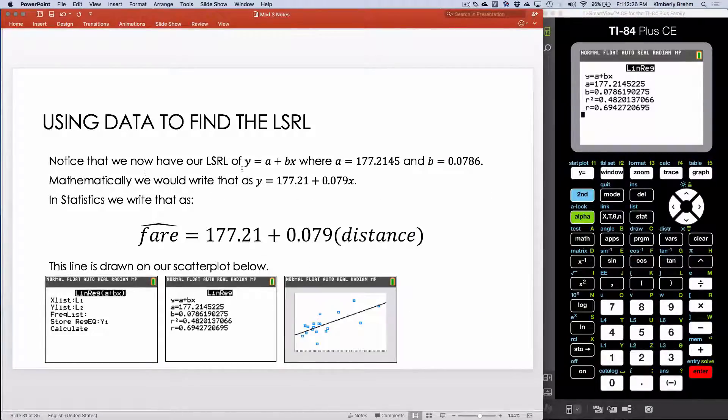So we have our least squared regression line where A is 177.214 and B is 0.0786. Now, if we were just doing this mathematically, we would replace A with that value and B with that value, and this would be our equation.